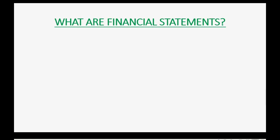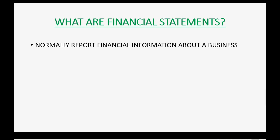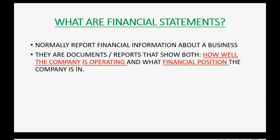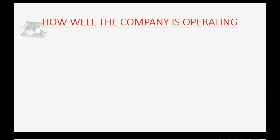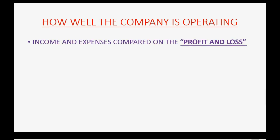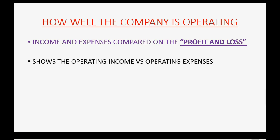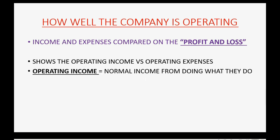So what are financial statements in the first place? Well, normally they would be reported about a business. They are documents and reports that show both how well the company is operating and what financial position the company is in at any given moment. The income and expenses of the company are compared to each other on a report called the Profit and Loss. It shows the operating income of the company versus the operating expenses. By operating income, I mean the normal income from doing what they do to make money.